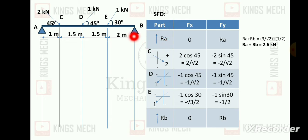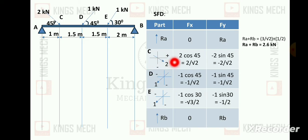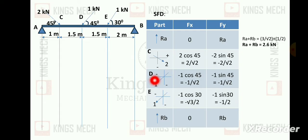Points A, B, C, D, E are marked. Ra is going upwards. For the 2 kN load: x is positive, y is negative, so F of x is 2 cos 45, and in the y direction it is minus 2 sin 45, giving 2 by root 2 and minus 2 by root 2. For point D, x and y are both negative — so minus 1 cos 45 and minus 1 sin 45, giving minus 1 by root 2 and minus 1 by root 2.